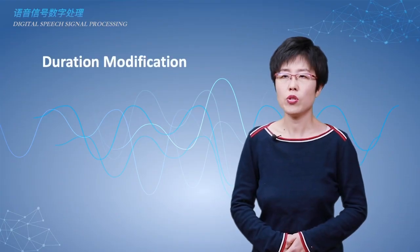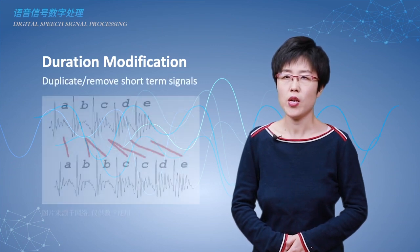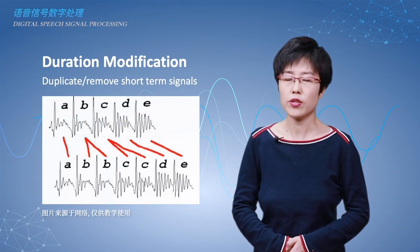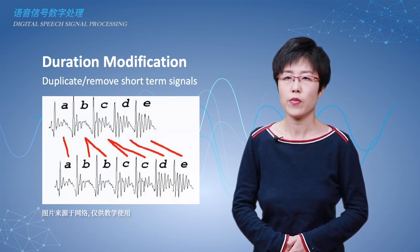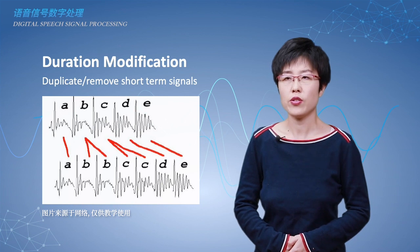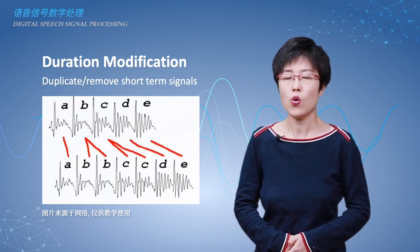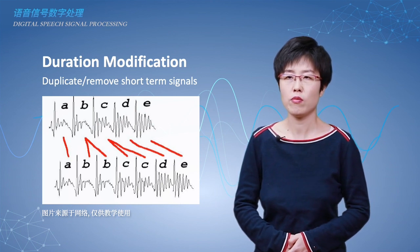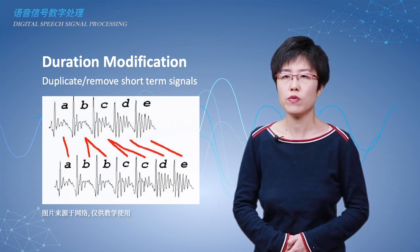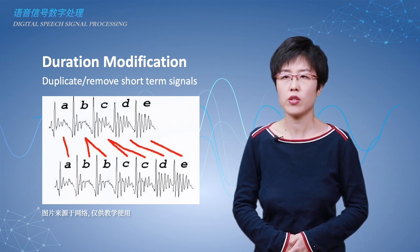Duration modification aims to increase or decrease the duration of the speech signal or the speaking rate. Through duplicating short-term signals, we could increase the length of the whole speech signal. Through removing short-term signals, we could decrease the whole signal length.